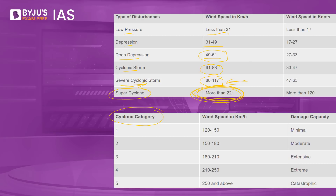There are also additional categories assigned to cyclones. If the wind speed is between 120 to 150 km/h, it is Category 1; 150 to 180 is Category 2; 180 to 210 is Category 3; 210 to 250 is Category 4; and anything above is Category 5. These are the different categorizations associated with the different types of disturbances we see in cyclones.